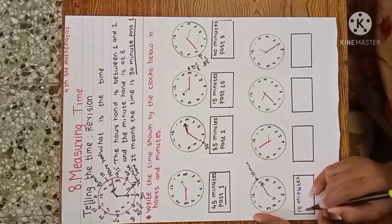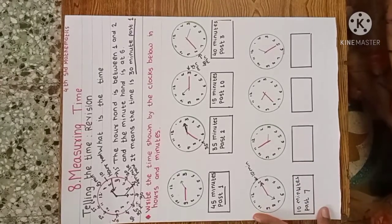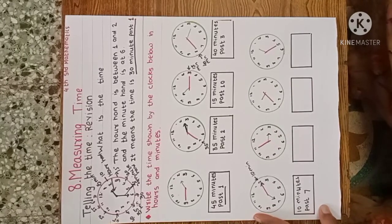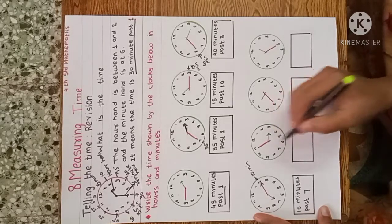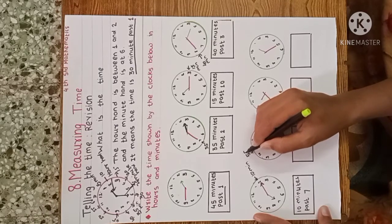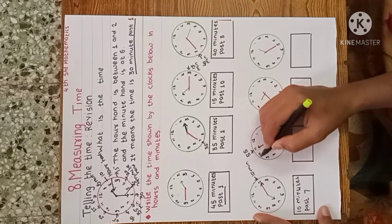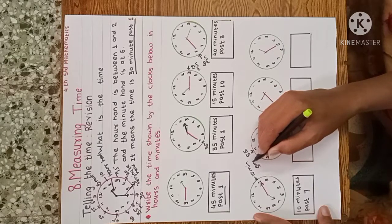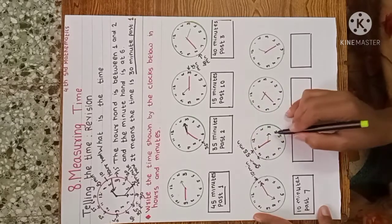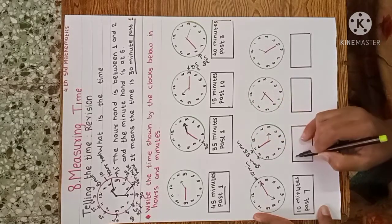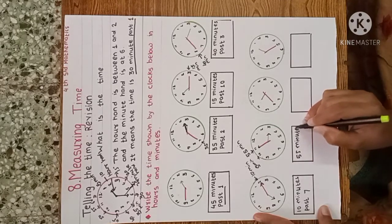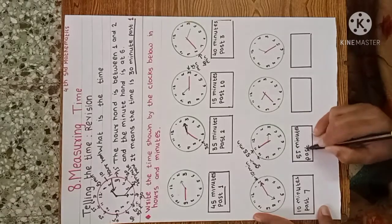Next: the hour hand is at three and the minute hand is on 11. At 11, how many minutes? Five times 11 is 55, so if we count: 5×10=50, then add 5 to get 55. Therefore the time is 55 minutes past two.